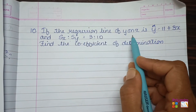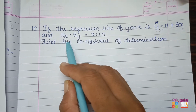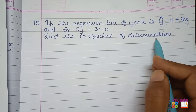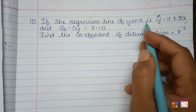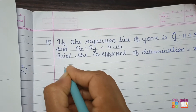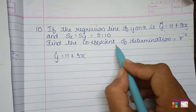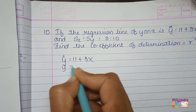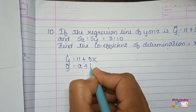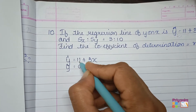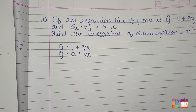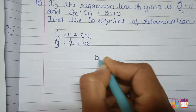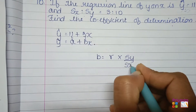Question number 10: the regression line of y on x is y-cap = 11 + 3x, standard deviation of x is 2, and standard deviation of y is given as 3 to 10 (i.e., sx:sy = 3:10). The question asks to find the coefficient of determination, that is r². From the regression line y-cap = a + bx, we identify b = 3. Using the formula b = r × (sy / sx).